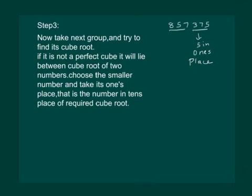Now, according to step 3, take the next group and try to find its cube root. Our next group is 857. We know that 857 is not a perfect cube.